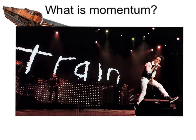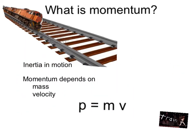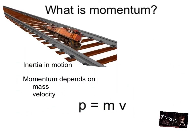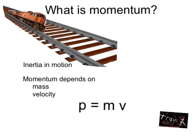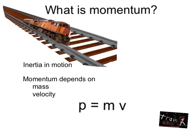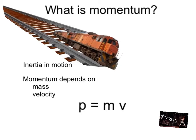No, not that train. This train going down the tracks has momentum. It has momentum because it has mass and has velocity and is moving.